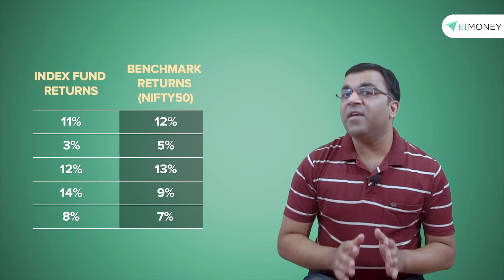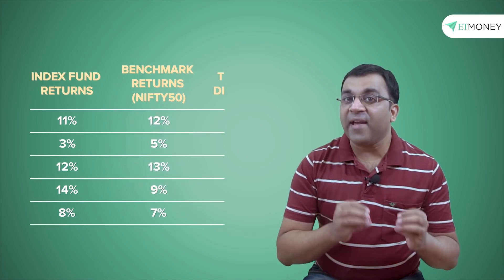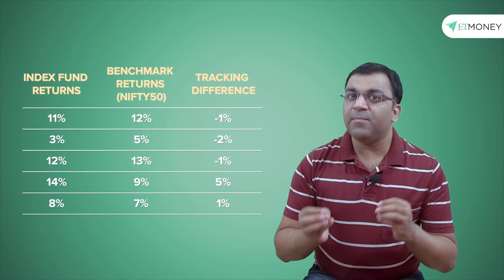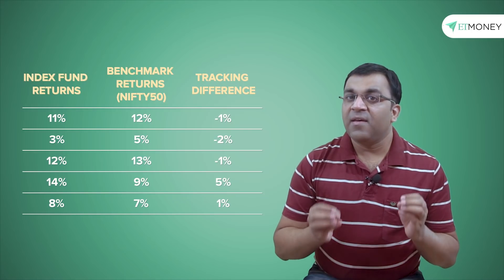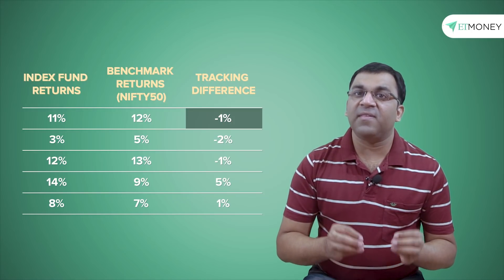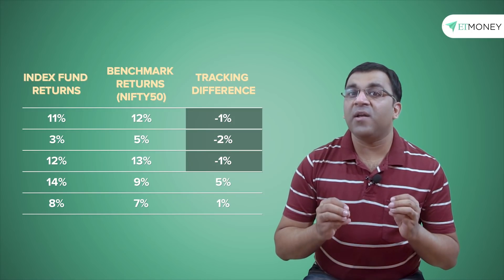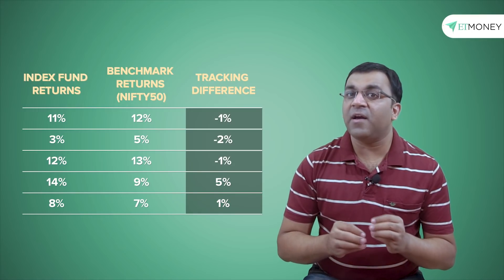The first thing we do here is to plot the tracking difference, which is quite simply the difference in returns. This gives us minus 1%, minus 2%, minus 1%, 5%, and 1% across the years.